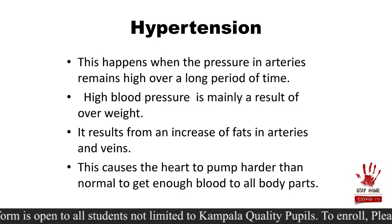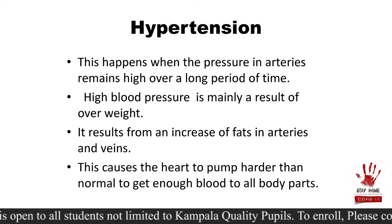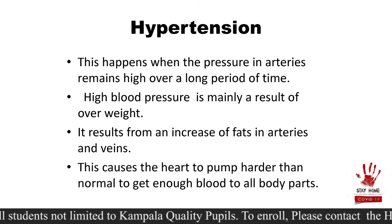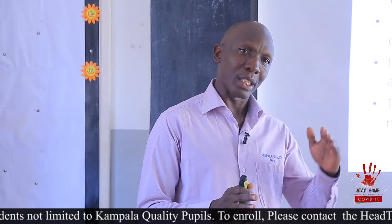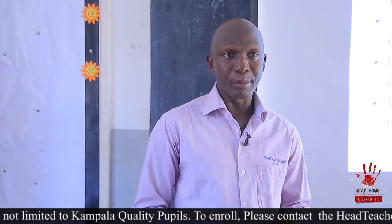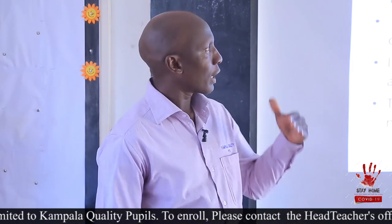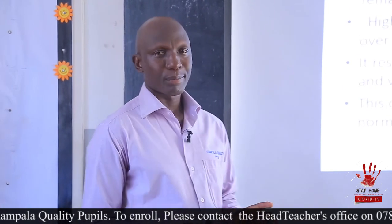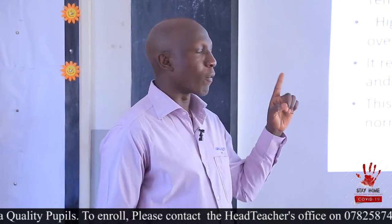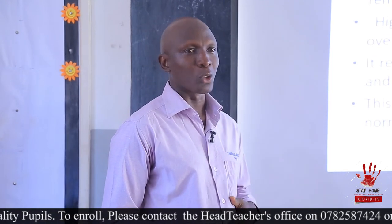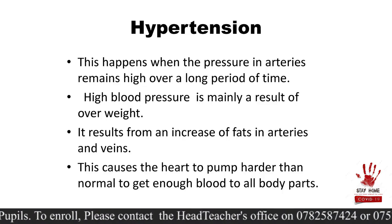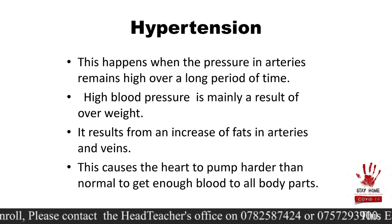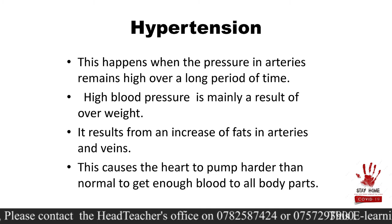There's another disease we call hypertension, or high blood pressure. You normally hear people say that person has got pressure. This happens when the pressure on the arteries remains high over a period of time. Arteries carry blood at high pressure — their pressure must be regulated. In hypertension, the pressure remains high all the time. The high pressure is normally the result of overweight and an increase of fats in the arteries and veins, which causes the heart to pump harder than normal to get enough blood to all body parts.